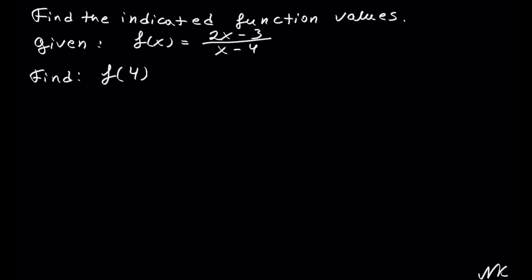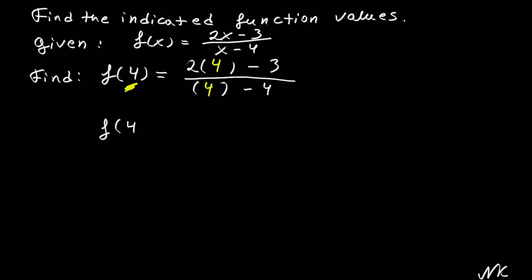Here we're going to calculate f of 4. We take the original function, which is 2 times x minus 3 out of x minus 4. Instead of x we're going to substitute 4, so we have 2 times 4 minus 3 out of 4 minus 4. This becomes f of 4 is equal to 2 times 4 is 8, minus 3, out of 4 minus 4.